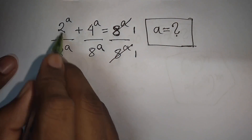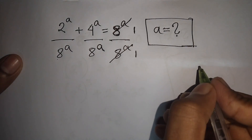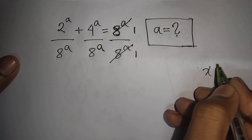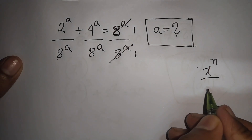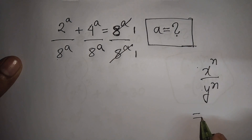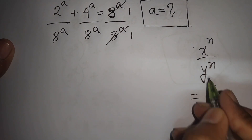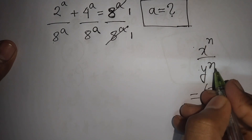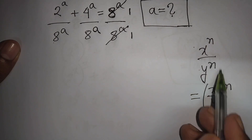From here we see the same power 'a' but different bases. Remember this rule: x to the power n over y to the power n is equal to x over y, the whole bracket raised to the common power n. That means same power but different base can be combined.